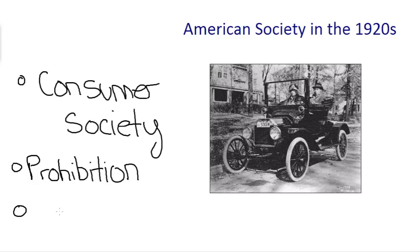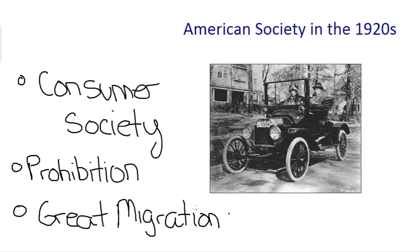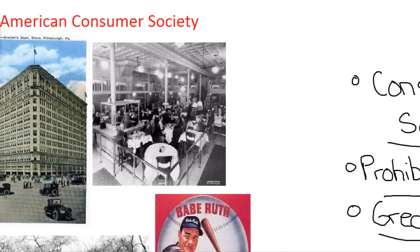Prohibition has a big impact on the United States and on American society. The final issue we're going to address is the Great Migration — a mass migration of African Americans from the Deep South to the Northeast, the Midwest, and the Far West during the late teens and in the 1920s. So these are three important trends, all three of which have a huge impact on American society during this decade.